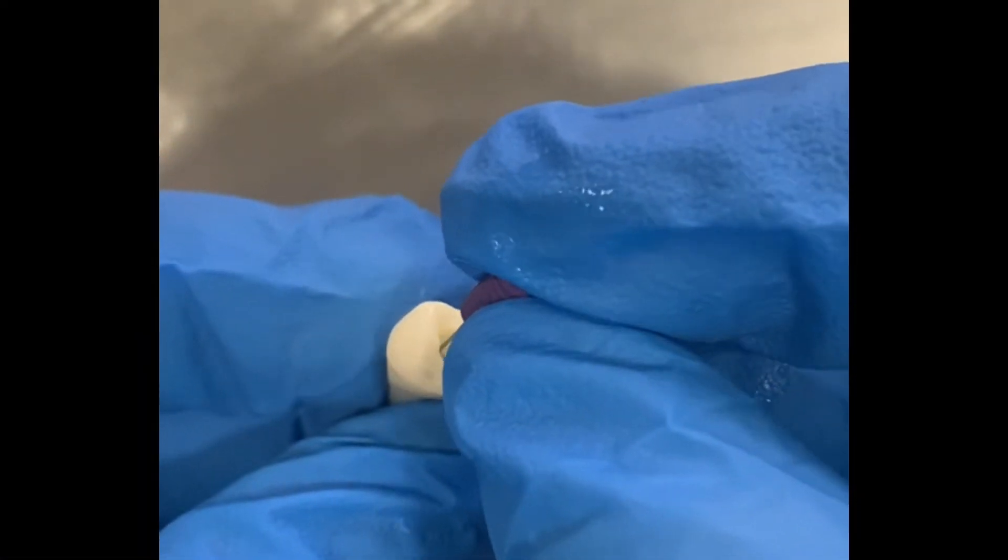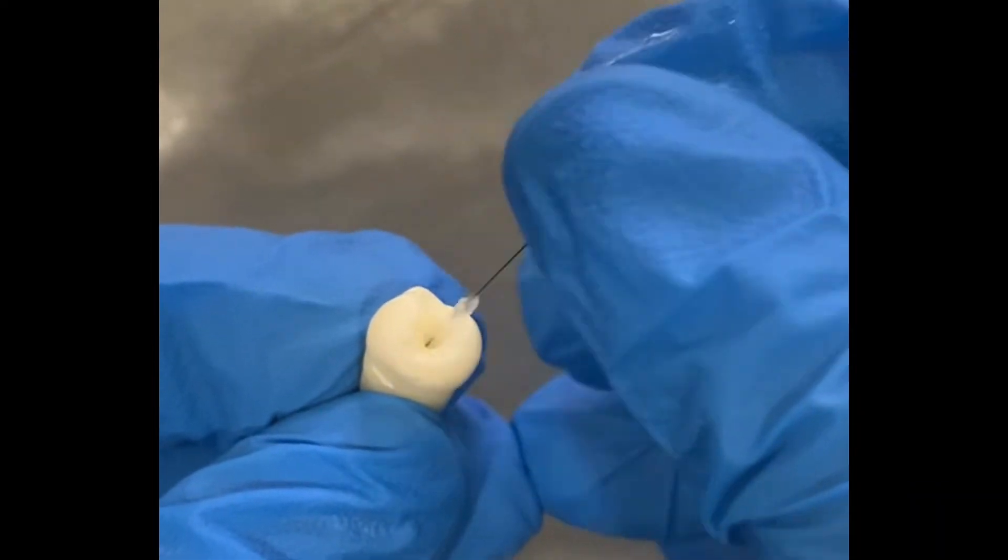Removal of the pulp from the canals is done with the help of a barbed broach. Insert it in the canal, rotate it and pull it out. The pulp comes out with it.